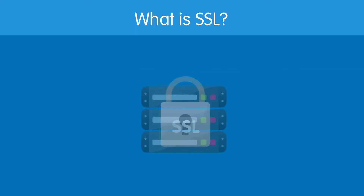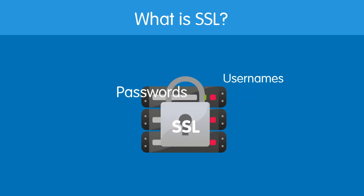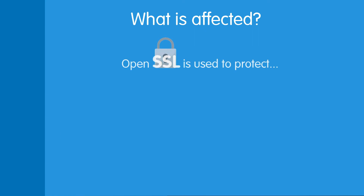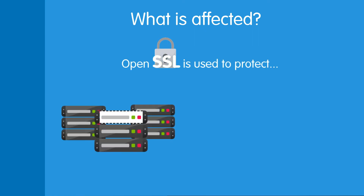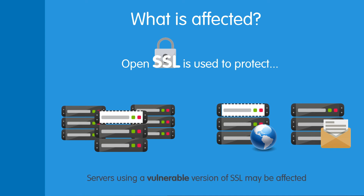So basically, the Heartbleed bug can allow possible hackers to obtain usernames, passwords and any other information which would have usually been protected by SSL. As OpenSSL is used to protect many internet servers and networks, anything from web servers to email servers and virtual private servers using a vulnerable version of OpenSSL may be affected.